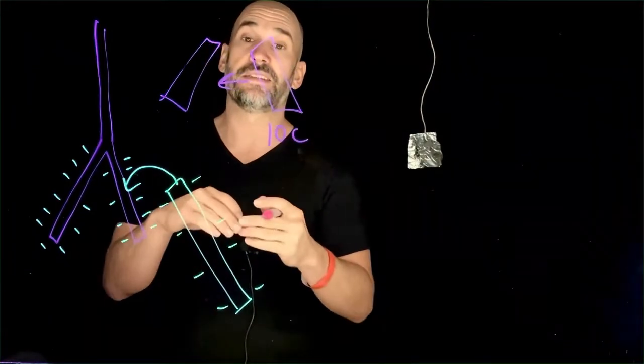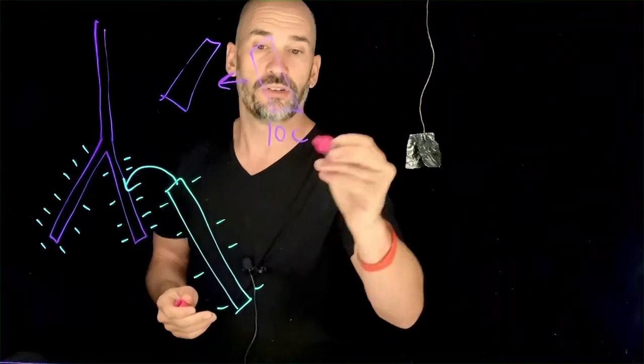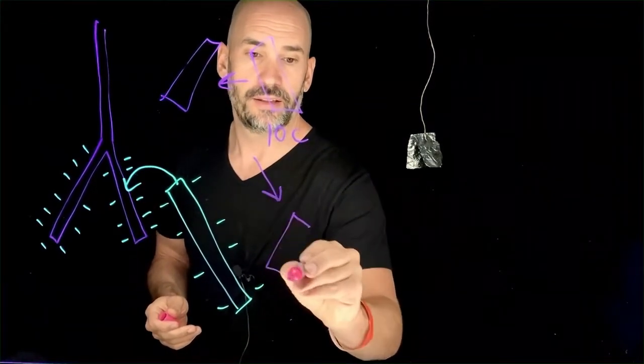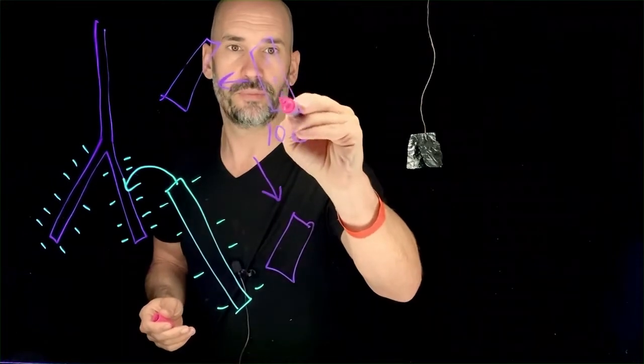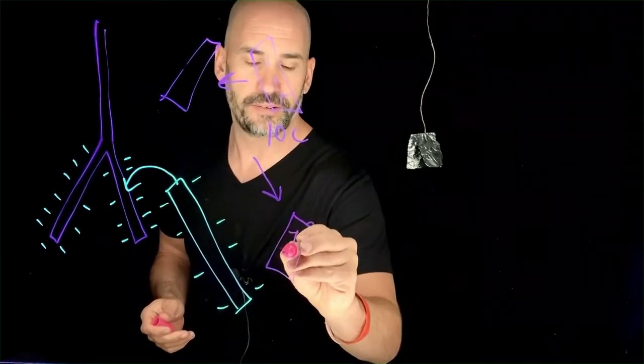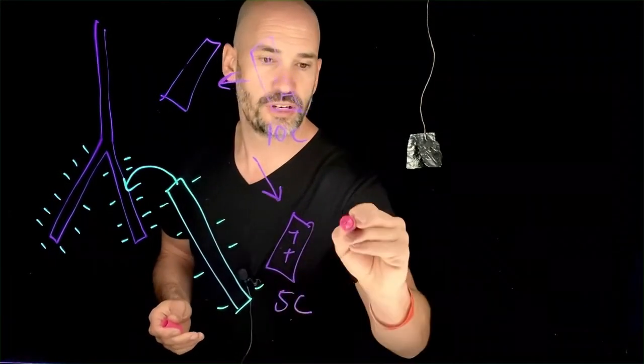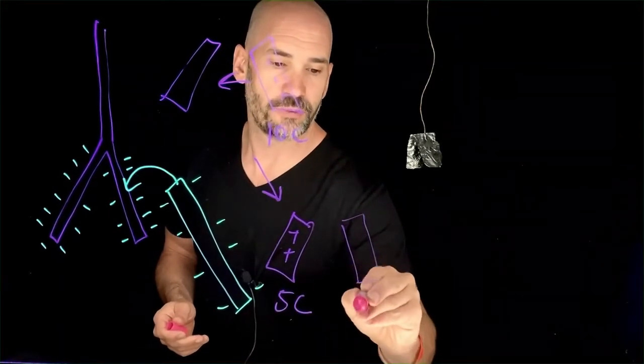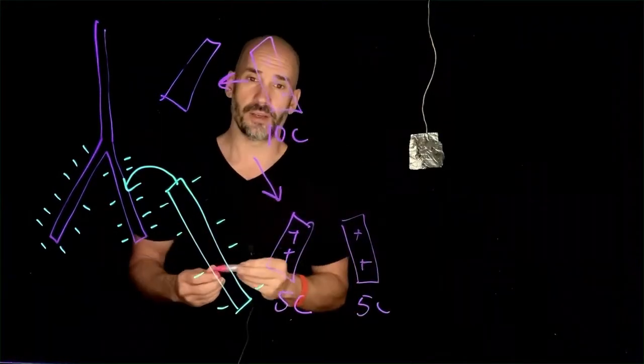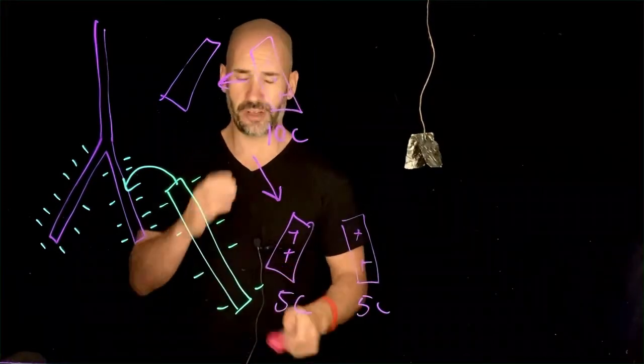What happens is that they reach an equilibrium where they both have the same charge. So after they touch, then there will be a situation where this guy will be positive with a five-coulomb charge, and this guy will be positive with a five-coulomb charge. They will end up being equal. Not too tough.